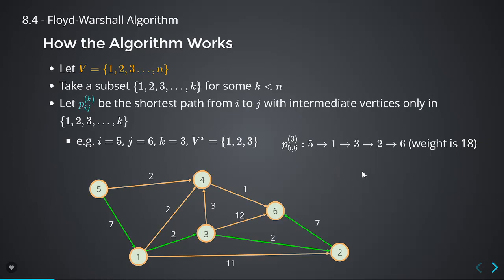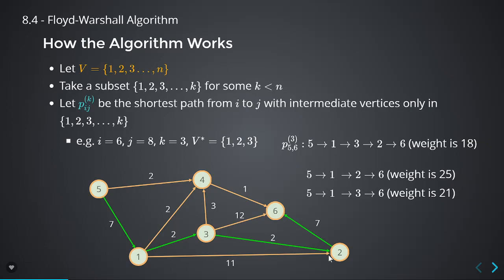If you're allowed only vertices 1, 2, and 3, the shortest path is 5→1→3→2→6 with weight 18 (7+2+2+7), because you're not allowed to go to 4. There are other paths like 5→1→2→6 costing 25, or 5→1→3→6 costing 21, but 18 is the best you can do with only vertices 1, 2, and 3.